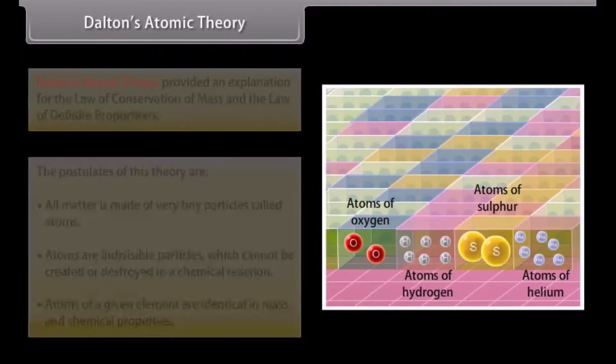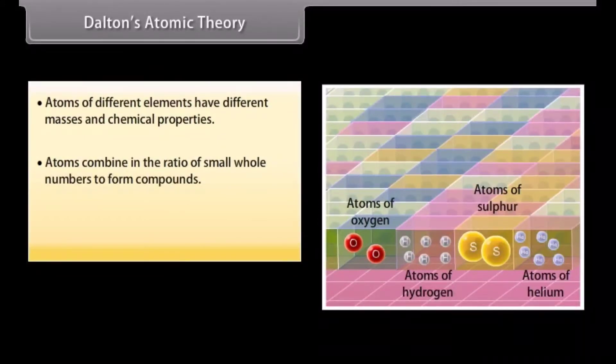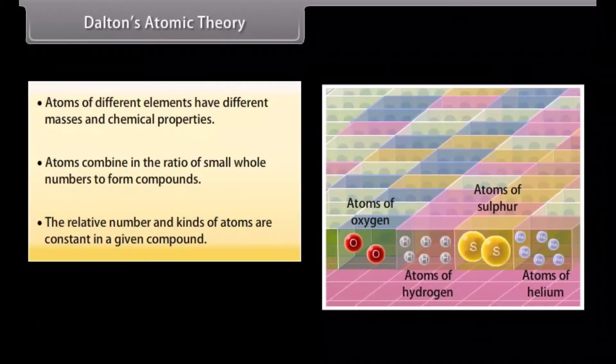4. Atoms of different elements have different masses and chemical properties. 5. Atoms combine in the ratio of small whole numbers to form compounds. 6. The relative number and kinds of atoms are constant in a given compound.